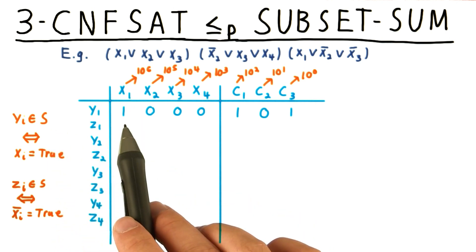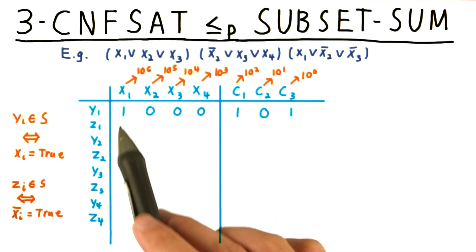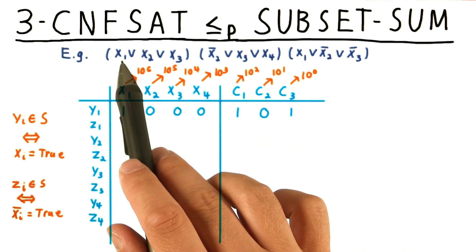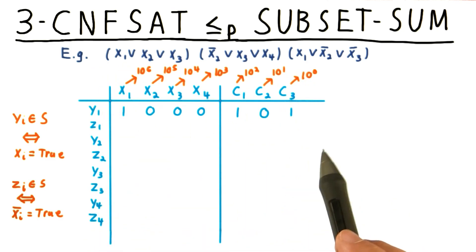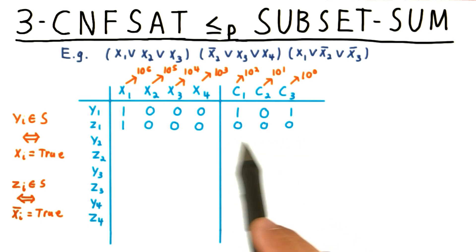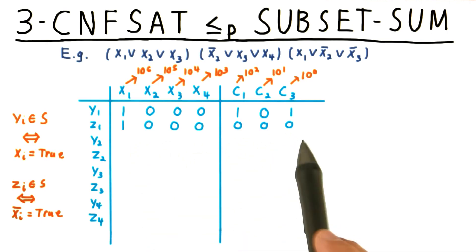Y1 sets x1 to be true, so we put a one in that column to indicate that choosing y1 means assigning x1. And this also satisfies clauses 1 and 3, since that's where x1 appears. Including z1 would also assign the variable x1 a value, but it wouldn't satisfy any of the clauses. So all these are written as zeros.